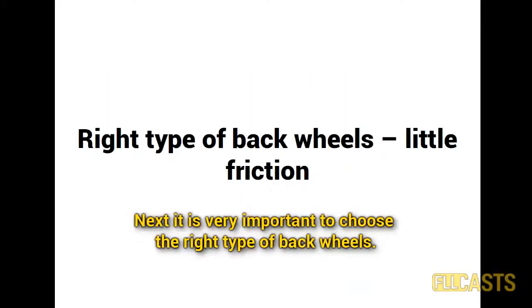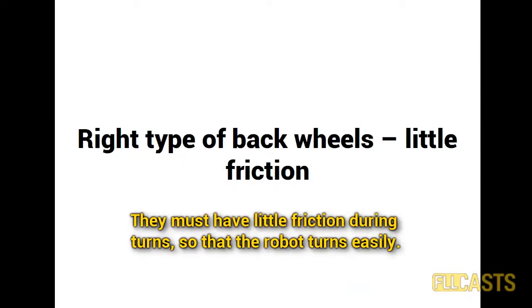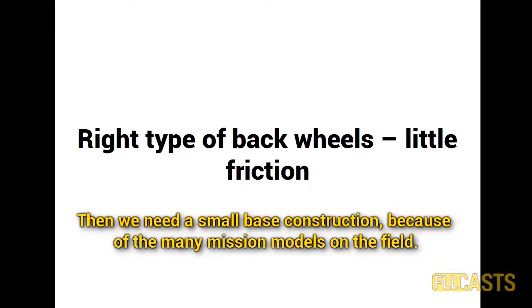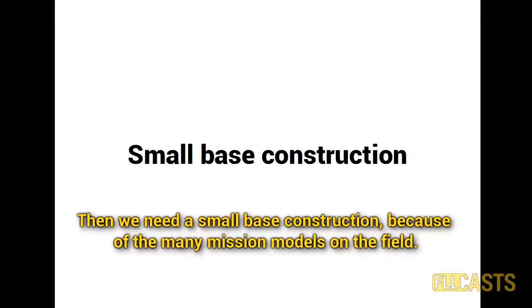Next, it is very important to choose the right type of back wheels. They must have little friction during turns so that the robot turns easily. Then we need a small base construction because of the many mission models on the field.